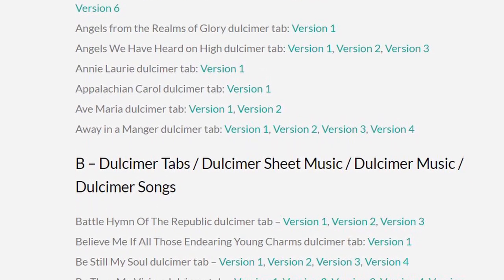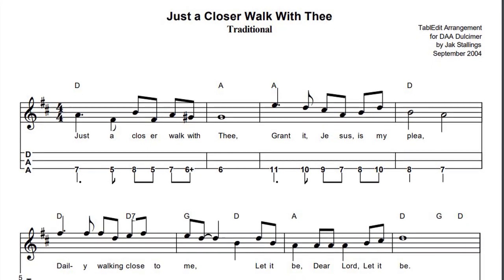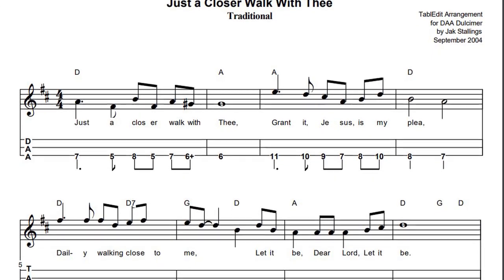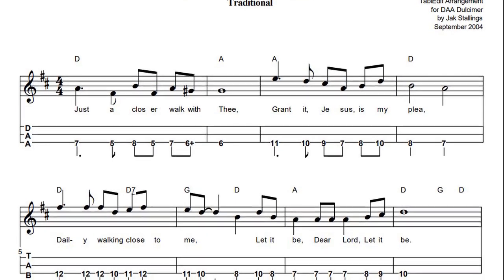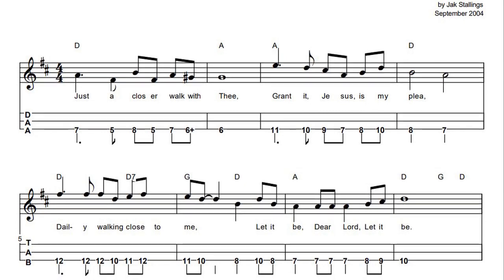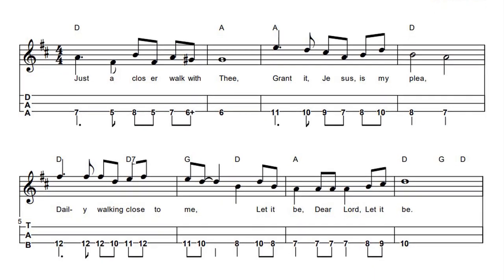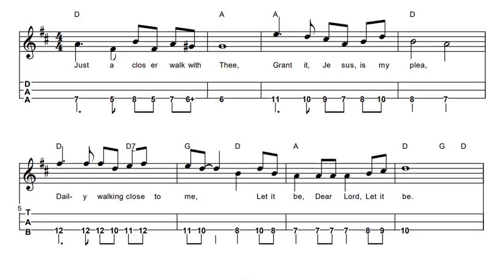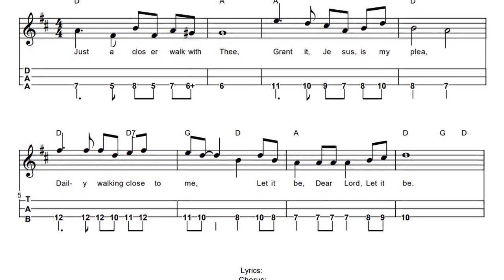Let's look closer at this one — it's a simple version. Notice the tuning is D-A-A. It shows the tuning of the three strings below the lyrics. It's only showing numbers for the melody string. You can use the other strings as drones. It also shows chords, so someone can play along with chords.